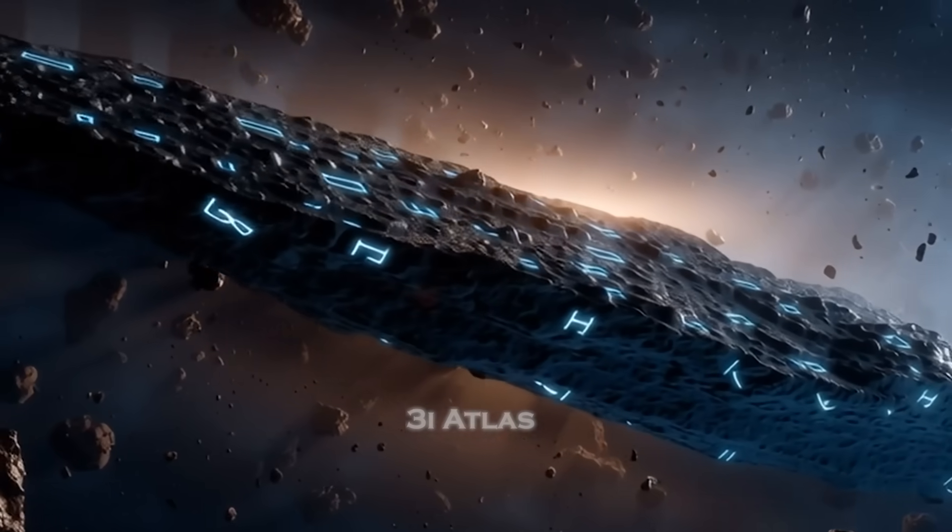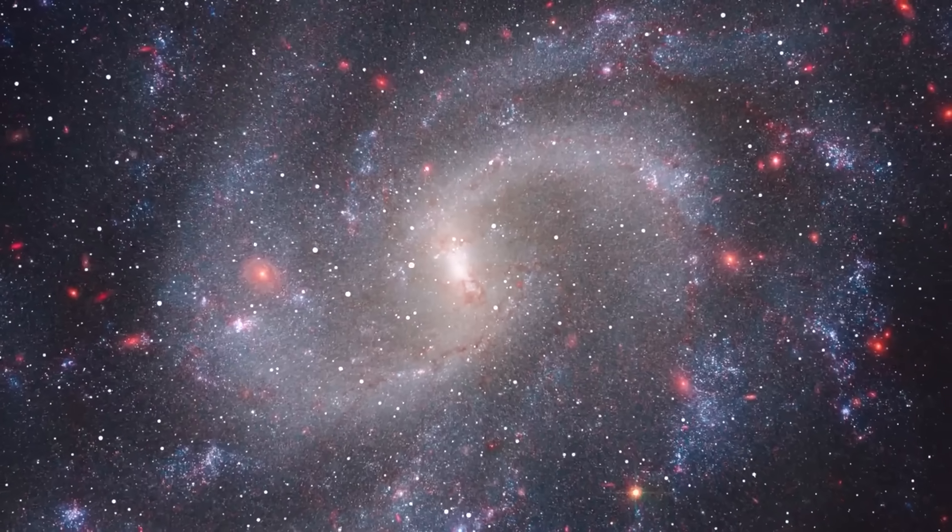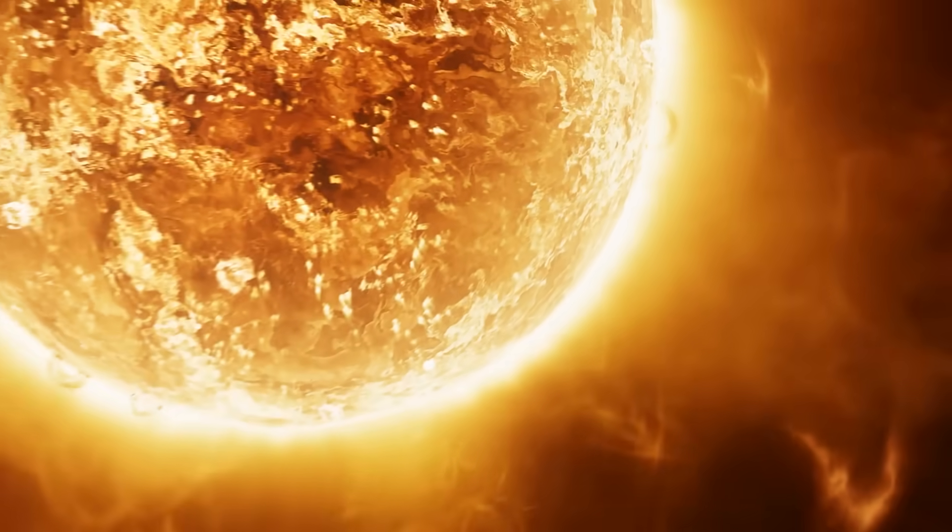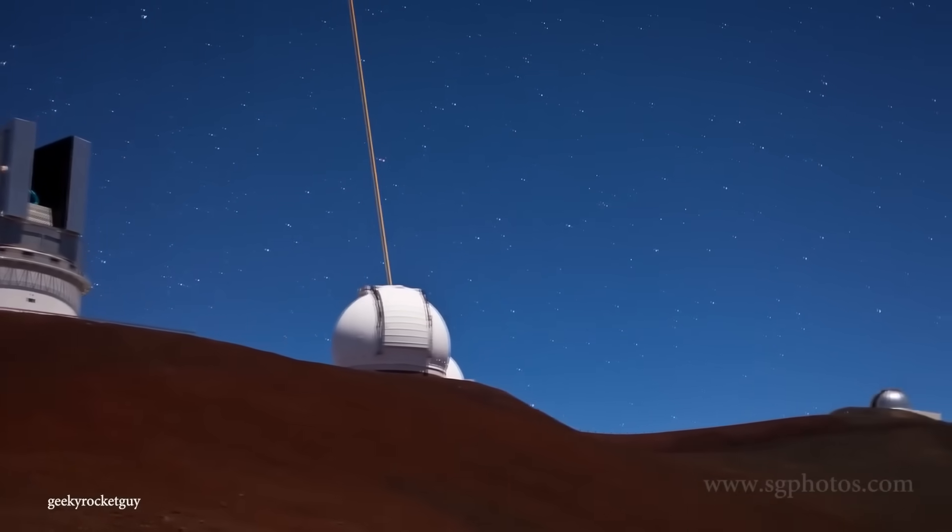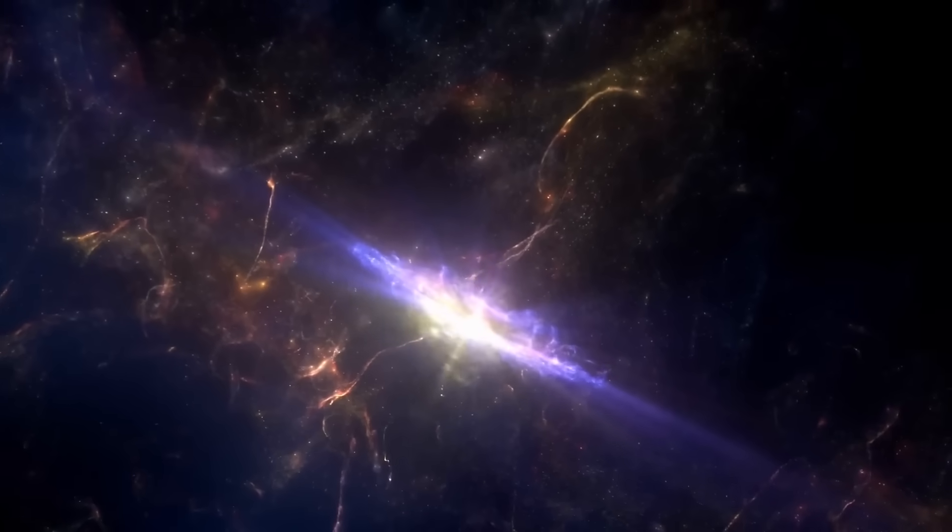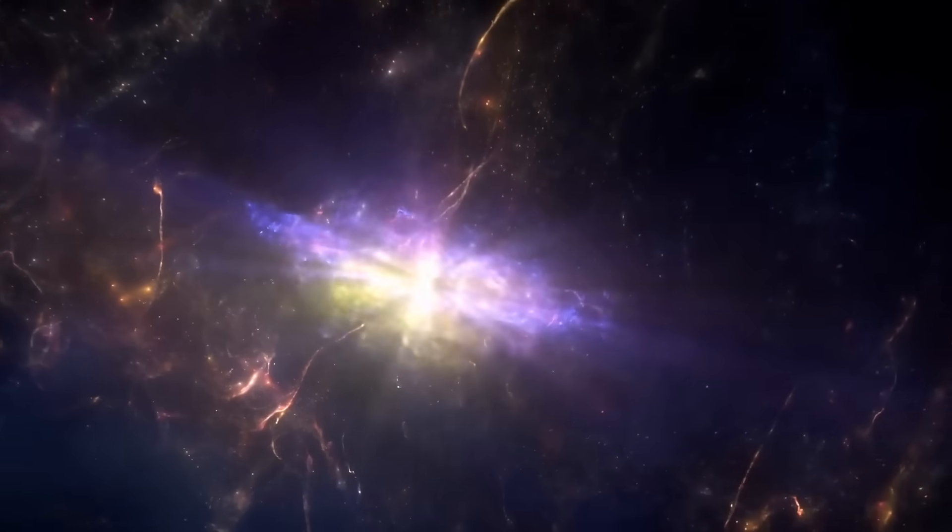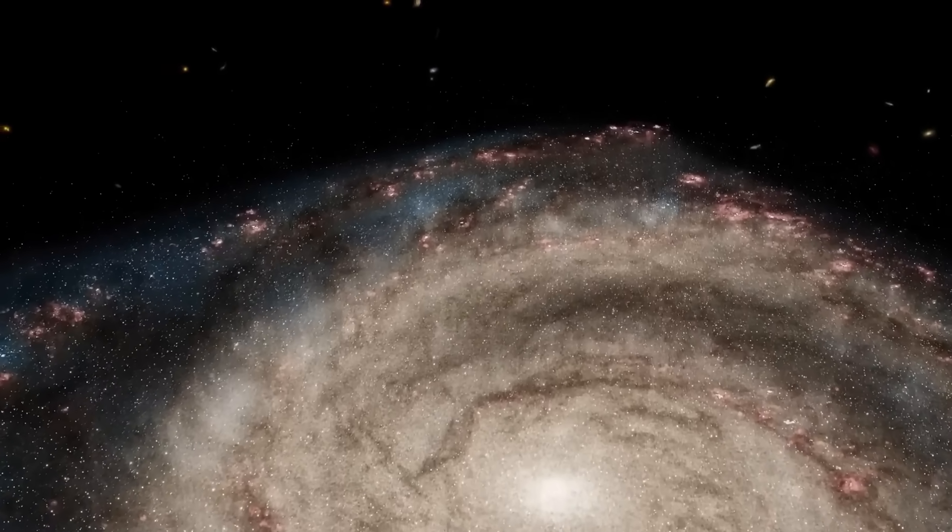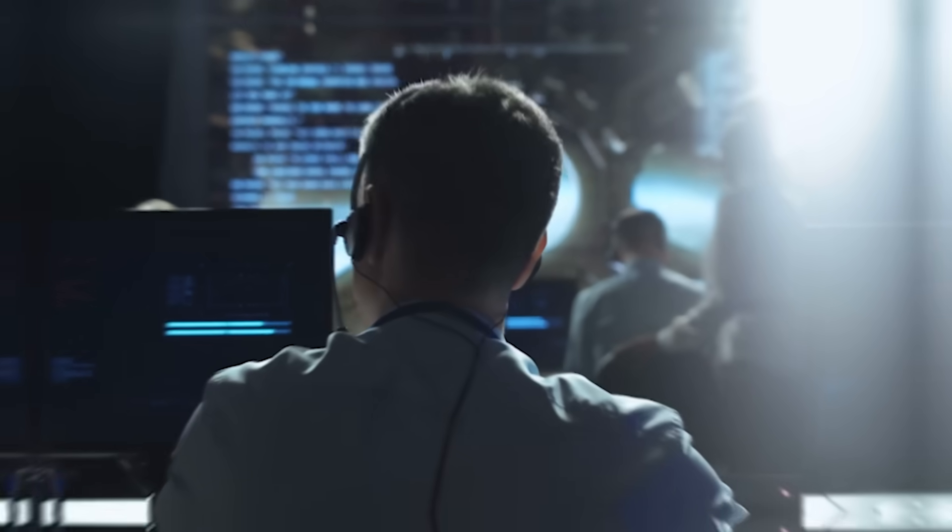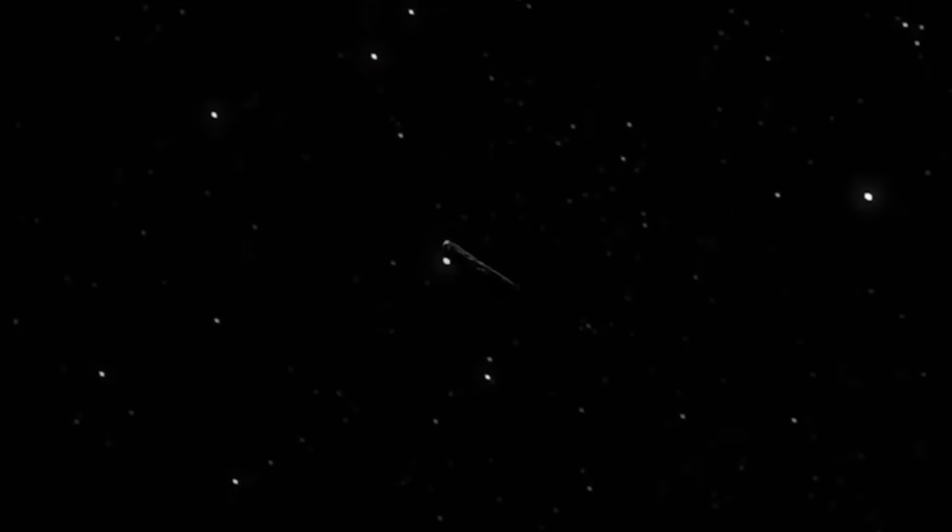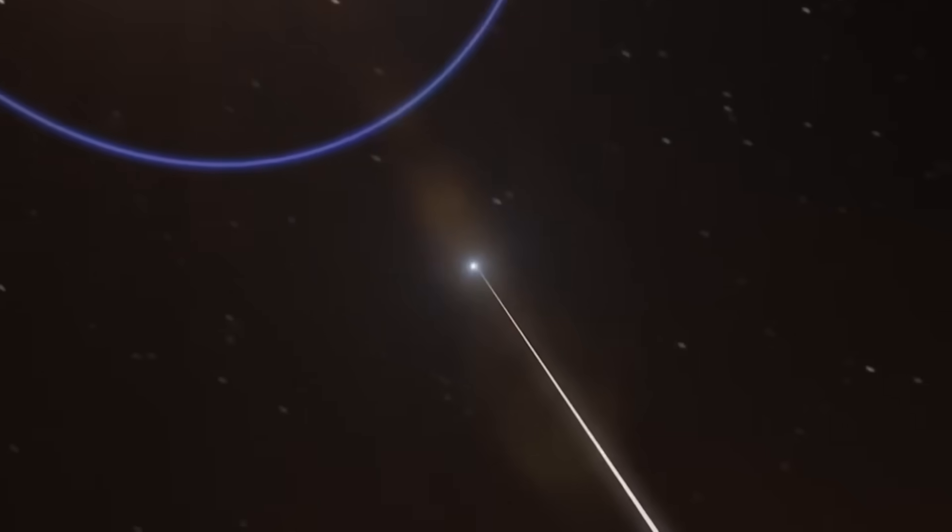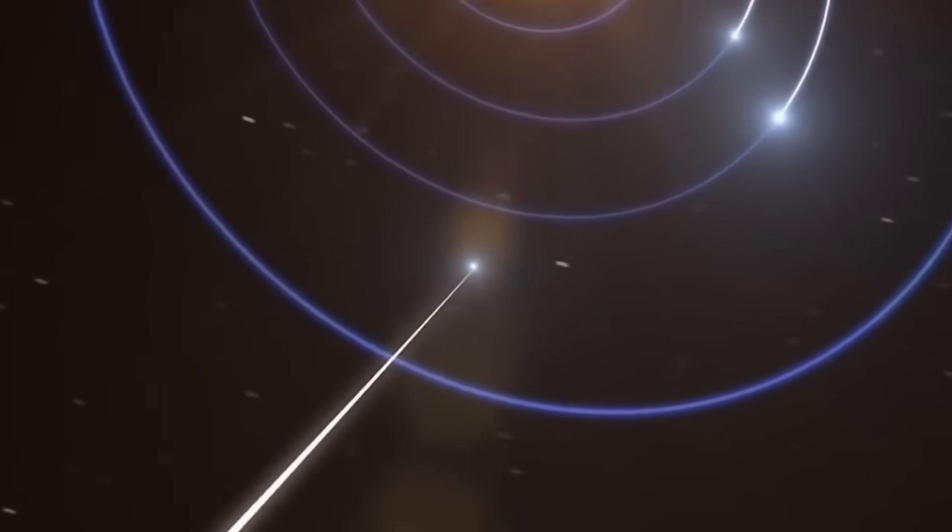Just as interest reached its peak, 3I Atlas vanished, not destroyed, but hidden. As it moved into solar conjunction, the object aligned perfectly with the sun from Earth's viewpoint, making it invisible to telescopes for several weeks. It was as if the universe had drawn a curtain over the most mysterious performance in modern astronomy. During this period, observatories went silent, waiting for it to reappear. NASA's funding delays and the European Space Agency's data embargo left the public with nothing but speculation. Meanwhile, simulations revealed that once it emerges from behind the sun, 3I Atlas will head straight toward Jupiter's orbital path, an eerie coincidence that has astronomers both excited and uneasy.